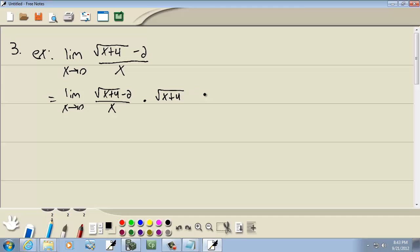Now what the conjugate is, is the first is the same and the second is the same. See how this is square root of x plus 4 and 2? This is square root of x plus 4 and 2, but the sign in the middle is different. This is negative, so this will be positive. And whatever we multiply by the top, we have to multiply by the bottom.